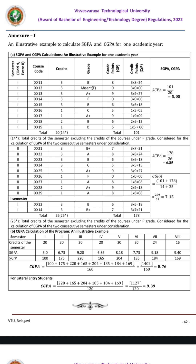The total credits is 160 — per year it is 40 credits, so four years into 40 credits gives 160. Above that, it shows the number of credits you have secured for each semester. You can see values like 100, 175, 220, 165 — like that it is available for each of the eight semesters.